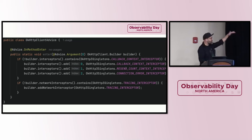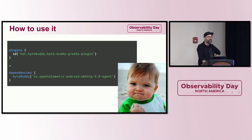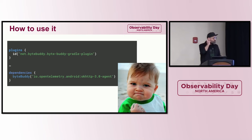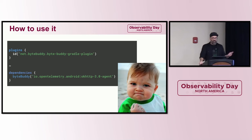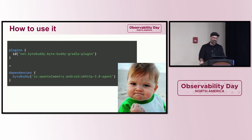So we have this instrumentation and the ByteBuddy Gradle Plugin. How do you use it? It's not code-free — you have to do something. Even though it's called automatic instrumentation, you do have to put two lines into your build script: include the ByteBuddy Gradle Plugin (you might already have that for another reason, in which case it's only one line), and add the dependency.